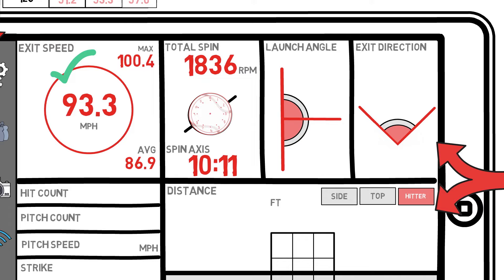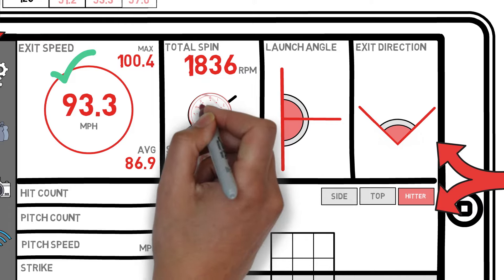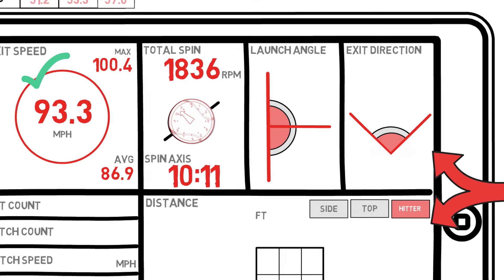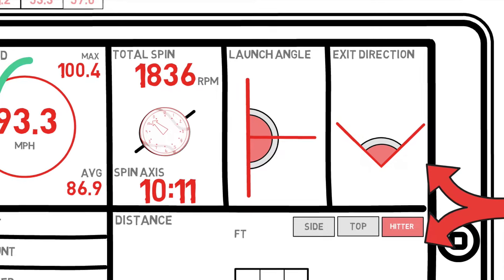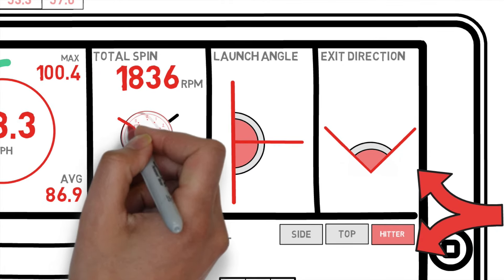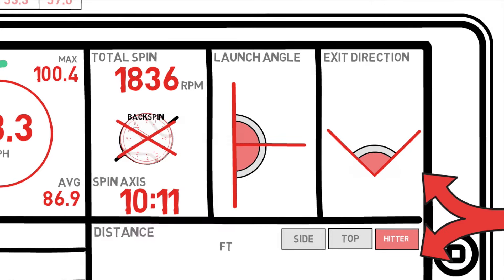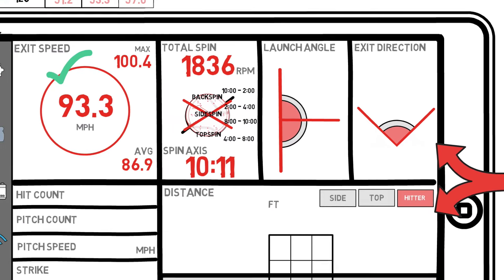For our example, we have a spin axis of 10-11, meaning the direction the ball is spinning from, not the axis it is spinning around. Viewing the ball from the catcher's perspective falls between the 10 and 11 mark on our clock. So what does that mean? Well, to break it down further for you, we can create four different sections on our diagram here. A ball hit with backspin will have a reading between 10 and 2 on the clock, with 12 being perfect backspin. Balls hit with spin axes between 2 and 4 and 8 and 10 will have more side spin.